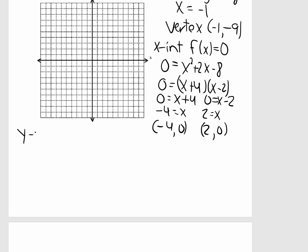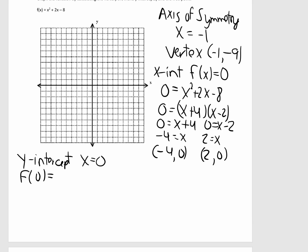All right, let's calculate the y-intercept. Y-intercept, x is 0. So, plug in 0 into the function. So, 0² is 0, 2 times 0 is 0, minus 8. That simplifies to -8. So, the y-intercept is (0, -8).